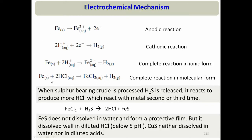Iron chloride does not precipitate out on the metal surface, so it does not form any passive layer and corrosion rate does not reduce. If the crude oil is high-sulfur, there will also be H₂S going into the overhead section. H₂S reacts with iron chloride, producing iron sulfide and regenerating HCl, so this cycle continues. One might think iron sulfide would precipitate and form a passive layer to slow the reaction.